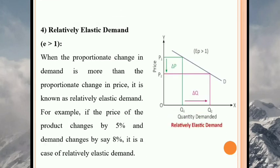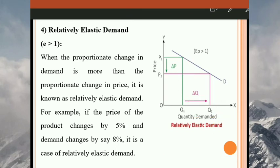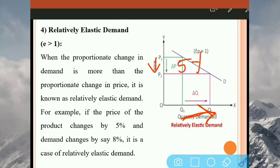Then relatively elastic demand. In relatively elastic demand, when the proportionate change in demand is more than the proportionate change in price, it is called relatively elastic demand. So here the price of the product changes by 5%, but the demand changes by 8%. That is relatively elastic demand — proportionate change in demand is more than proportionate change in price. Looking at the diagram, price falls by 5% but demand increases by 8%. Price changes 5%, but demand changes 8% — that is relatively elastic demand.